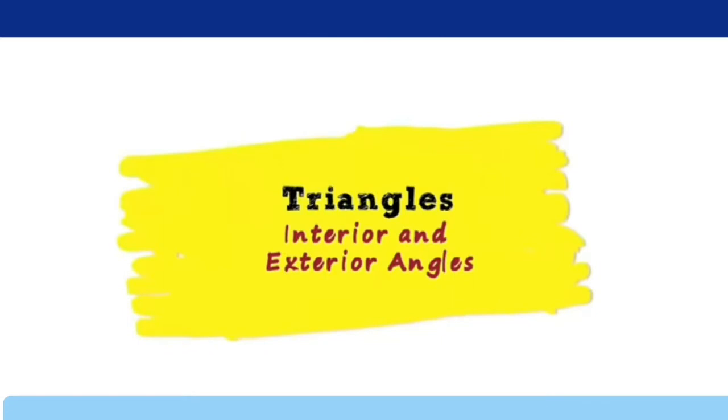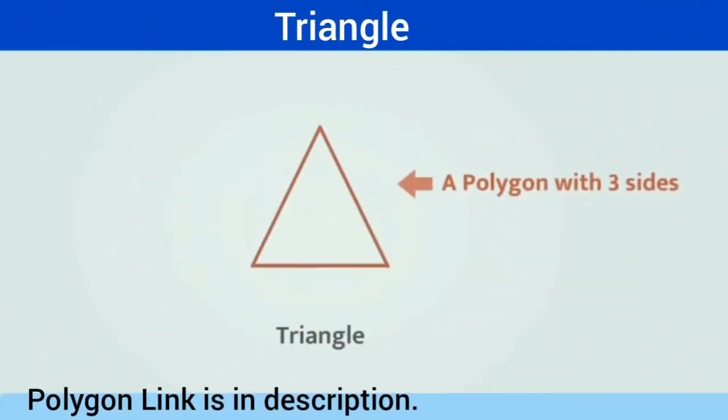Let us understand first interior and exterior angles of a triangle. In our previous videos we have learned that a triangle is a three-sided polygon. It has three vertices, three sides, and three angles.